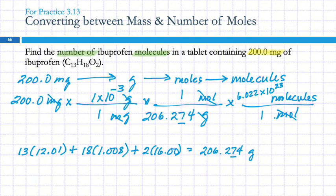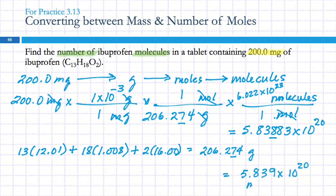Yeah, not done yet. So now we need to actually calculate the molecules. Are we expecting a big number or a small number? A big number. So, yeah, beyond ginormous. And we need to look all the way over to the right side of the calculator display to see that it's times 10 to the 20th. So this would be 5.839 times 10 to the 20th molecules. One ibuprofen tablet has that many ibuprofen molecules in it, along with a bunch of other stuff. Any questions?